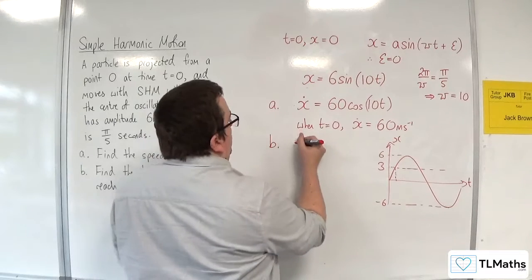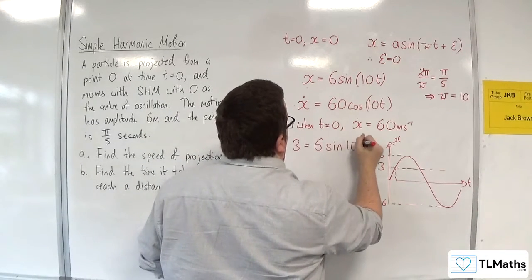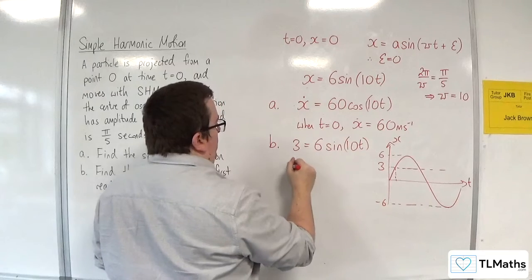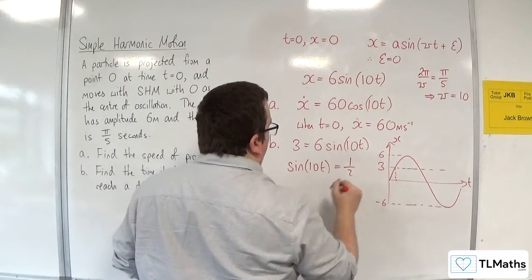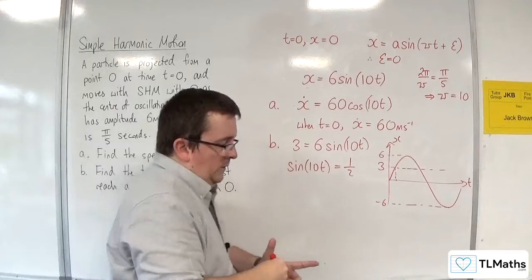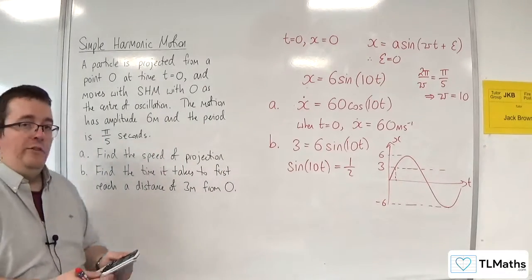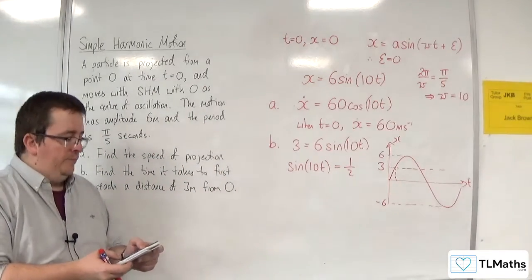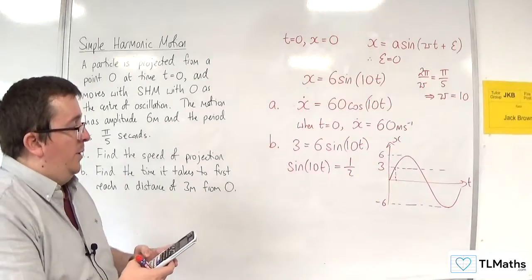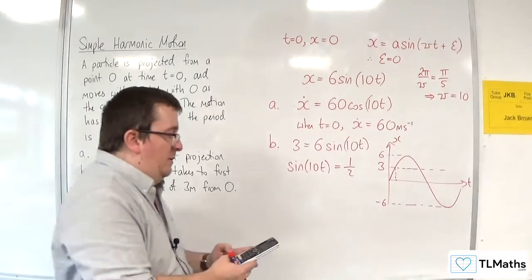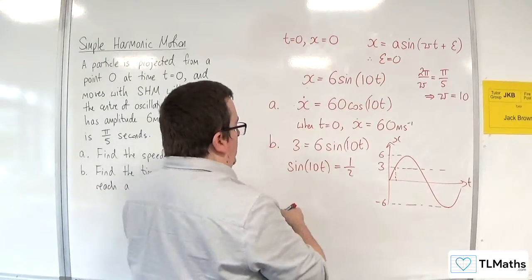So we're going to want 3 is equal to 6 sine of 10t. So sine of 10t has got to be equal to 1 half. So make sure your calculator is in radians when you do this. So inverse sine of 1 half is π over 6, and then I'm going to divide that by 10 to apply the transformation.